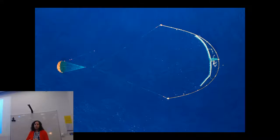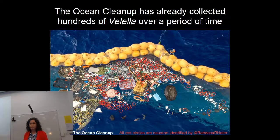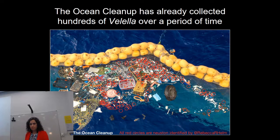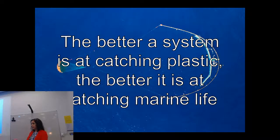When scientists went out to collect larval fish, they took a neuston tow for about 30 minutes in a few different places to estimate future fish stocks. The Ocean Cleanup system is operating on a massive scale, potentially over years rather than minutes. The systems are very similar but the scale is totally different. The Ocean Cleanup has already collected a lot of neuston — all these red circles are by-the-wind sailors caught alongside plastic, showing there are tons of animals mixed in with the plastic.